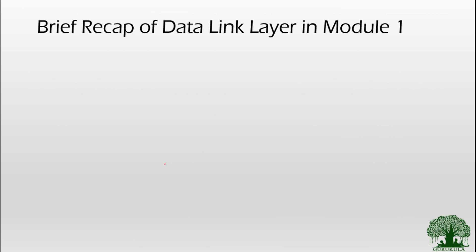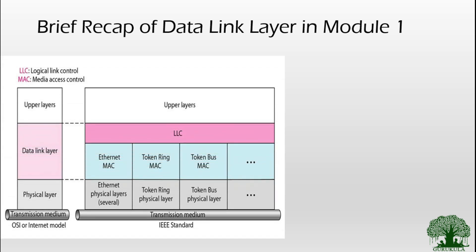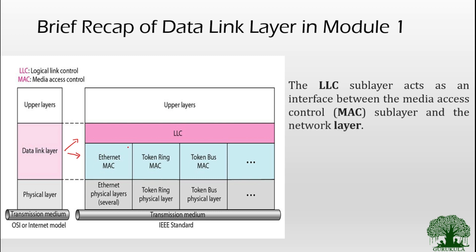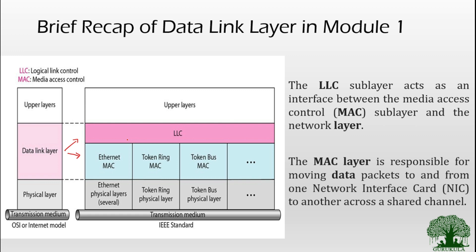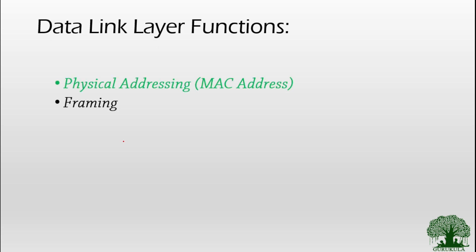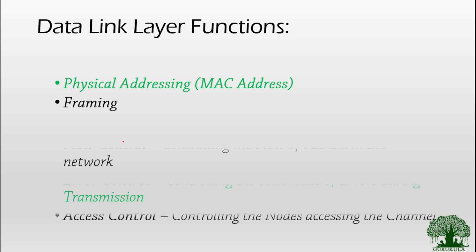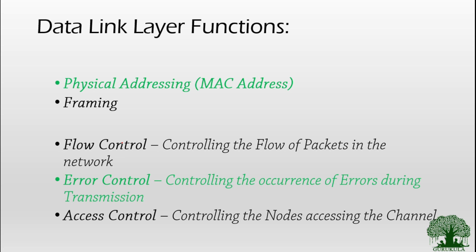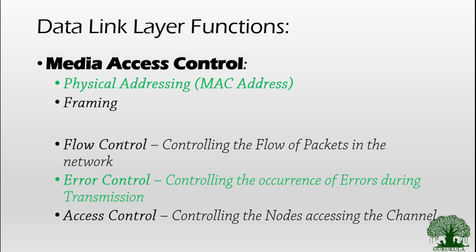Let us see what are all the things we have already discussed in the data link layer in the first module. We very well know that the data link layer is not one single layer — it is further classified into two sub layers. The first one is LLC, logical link control, which acts as an interface between the media access control sub layer and the network layer. The second sub layer is the MAC layer, that is media access control layer, which is responsible for moving data packets from one NIC card to another NIC card. We have also seen the various functions of the data link layer: physical addressing, framing, flow control, error control, and access control. The first two are functions of the MAC sub layer and the rest are the responsibility of the LLC sub layer.